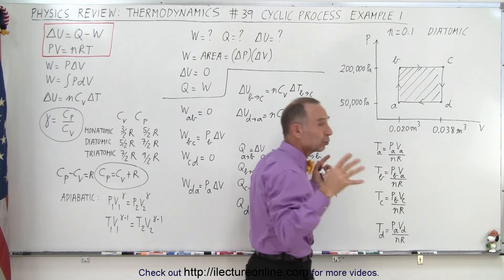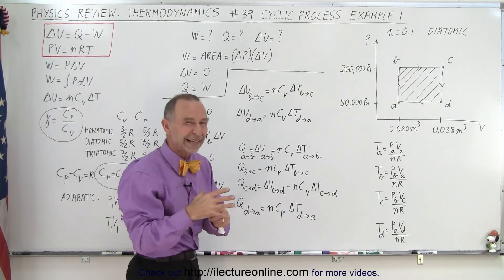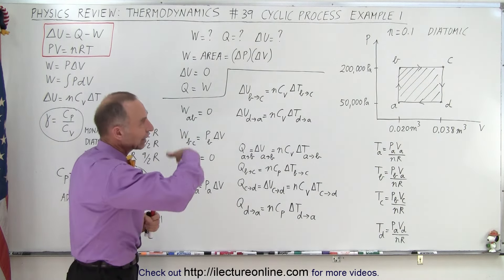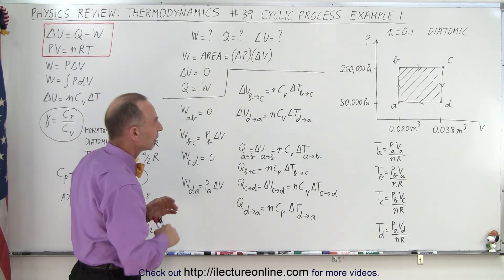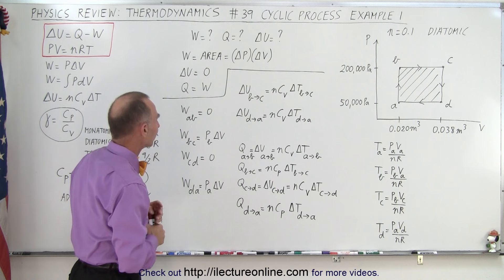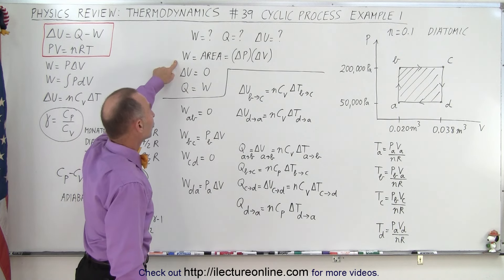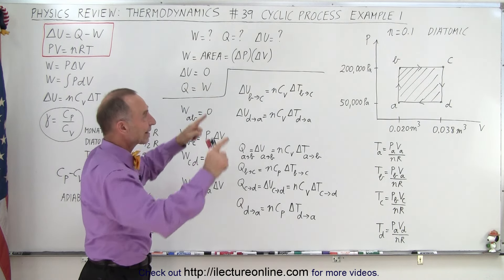If the cycle is in the opposite direction, counterclockwise direction, then we're doing work on the gas, which means negative work. But typically, the process is doing the work, the gas is doing the work, so it's in a clockwise cycle. The work done is always going to be equal to the area inside that cycle.